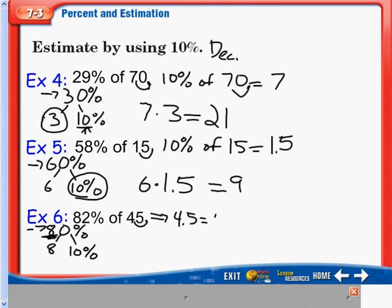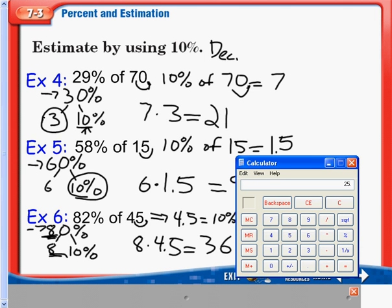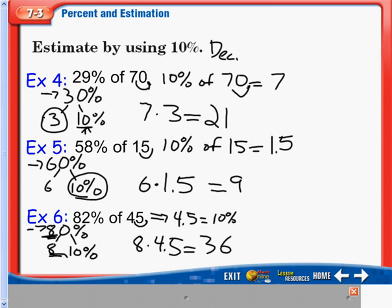Sorry, 4.5 equals 10%. Now, we multiply our pieces together of 8 and 4.5 to get our result of 36. We plug that in on our calculator to double check. 8 times 4.5 equals 36. And that is our answer.